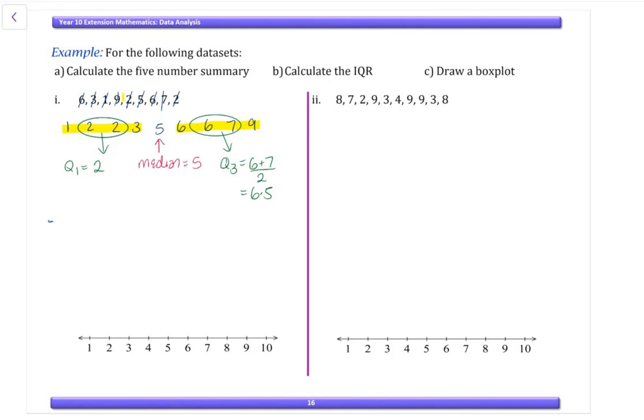So our five number summary: minimum is one, Q1 is two, Q2 which is our median is five, Q3 or our upper quartile is 6.5, and our max is nine. Our interquartile range, our IQR, is going to equal our Q3 minus our Q1, which is 6.5 minus two, which is 4.5. Should work down the page, not across, but I'm conscious that I do not have enough room.